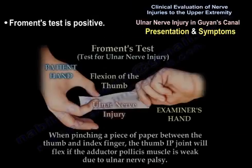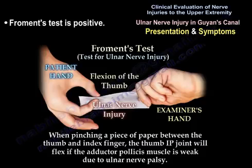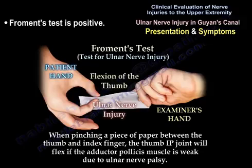Froment's test will be positive due to weakness of the adductor pollicis muscle. When pinching a piece of paper between the thumb and index finger, the thumb IP joint will flex if the adductor pollicis muscle is weak due to ulnar nerve injury.